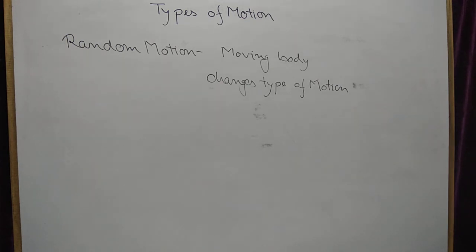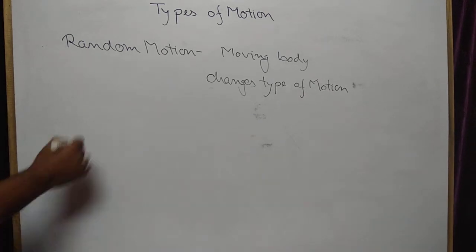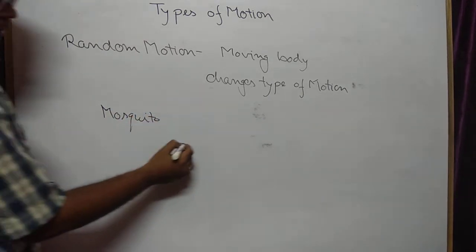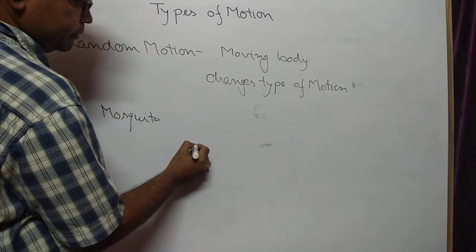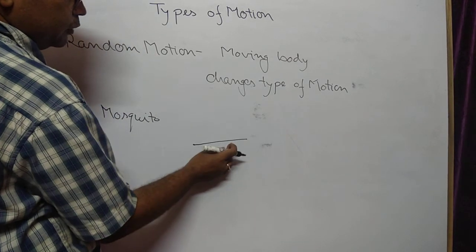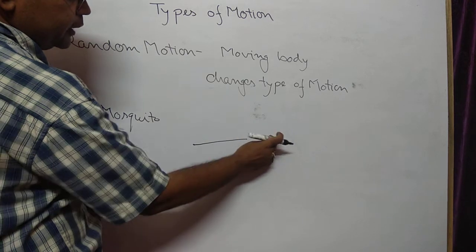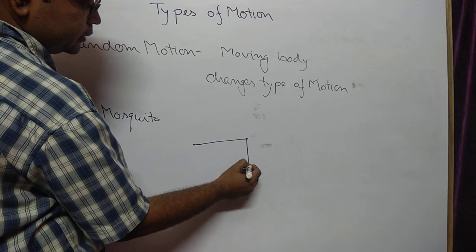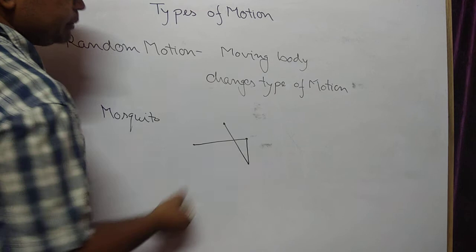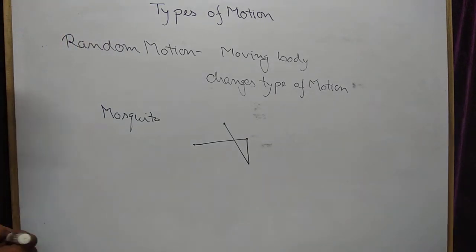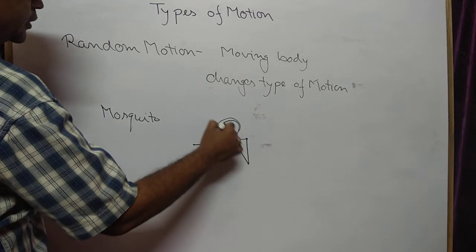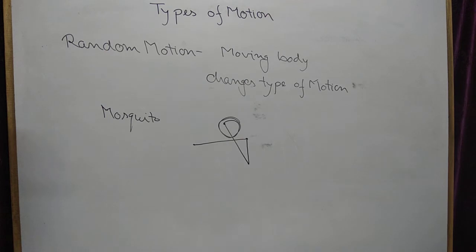For example, a flying mosquito. Suppose it is flying here, then it reaches over this way, supposed to move in one direction, but suddenly it changes its movement and goes to another direction, then moves to yet another direction. Sometimes it starts flying around a fixed point. This type of changing motion is known as random motion.